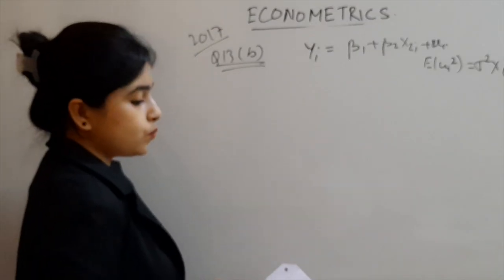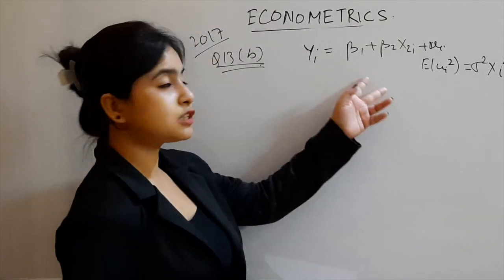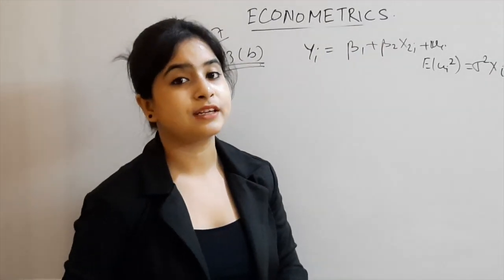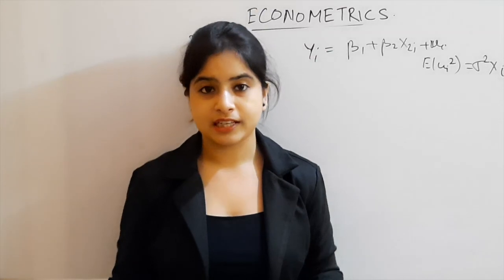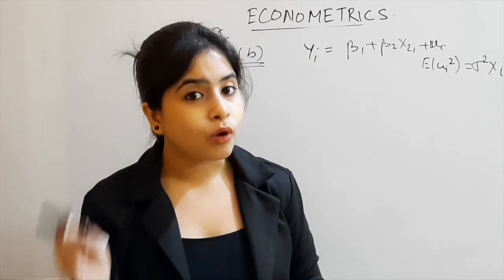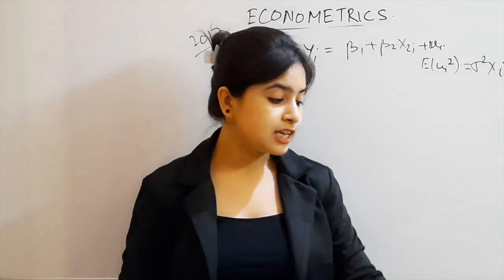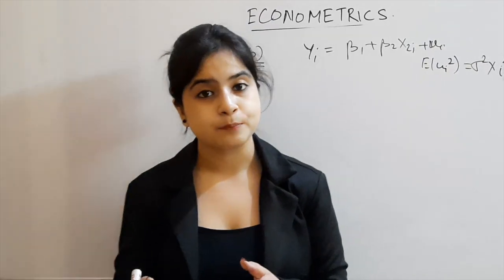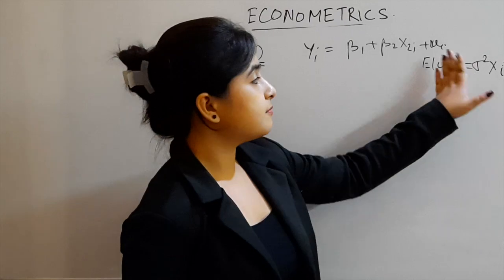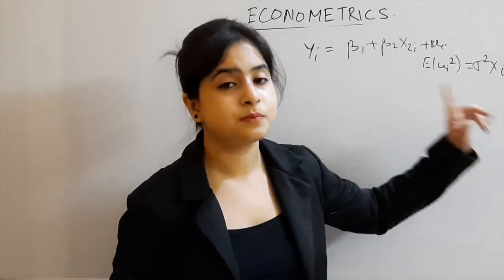Based on this, we are going to solve for the GLS variance of the regression slope β₂. We have been asked to find the GLS estimate. GLS is when we apply OLS to any transformed model — that procedure is known as the GLS estimate or GLS variance. Here the variance of the error term is not constant, meaning there is heteroscedasticity in the model.